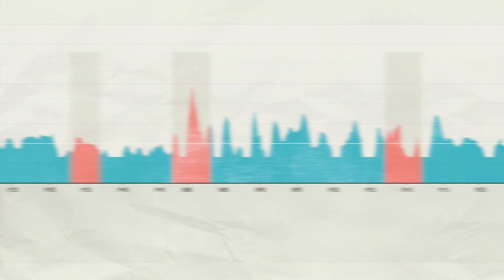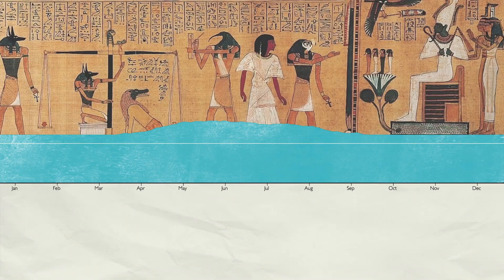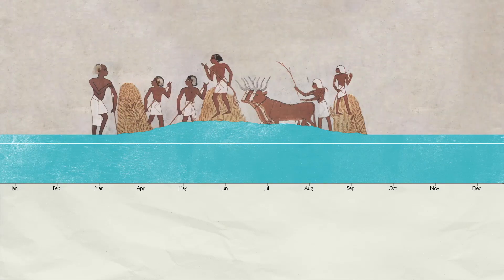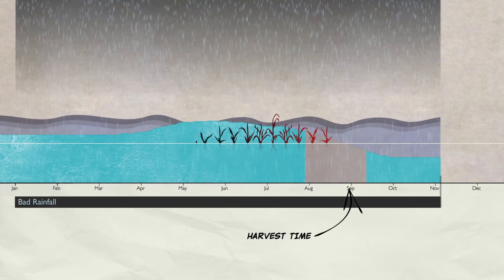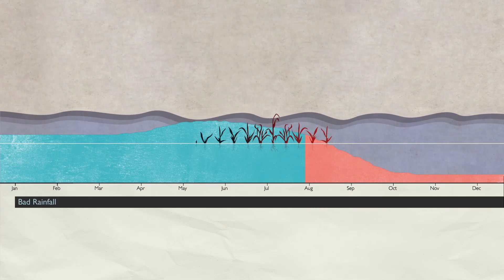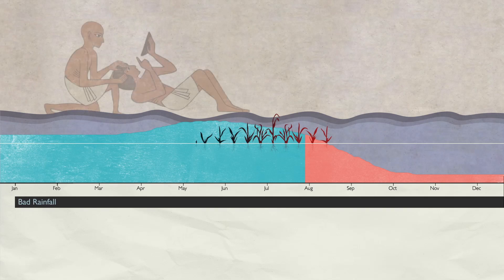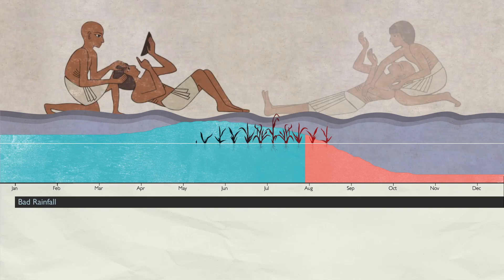The nice thing about real business cycle theory is that it actually explains most business cycles in the history of the human race. Consider earlier economies where say 80% of GDP was agriculture. What then could be the negative shock? Imagine a whole year of bad rainfall and then a very bad harvest. That would mean lower output for almost all of the economy, people having less to eat, and possibly more malnutrition — a very bad macroeconomic event. That's the simplest example of real business cycle theory.